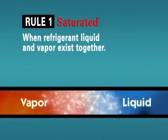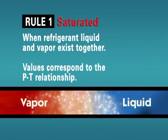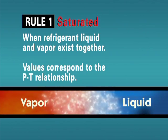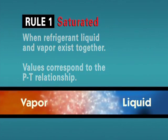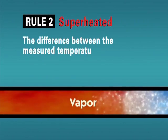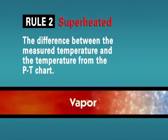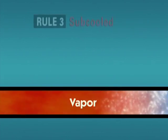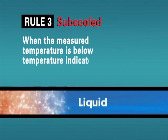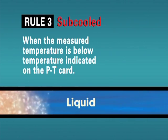Let's recap. There are three basic rules for determining the refrigerant condition in an operating system. Rule 1: When we have refrigerant liquid and vapor existing together, we have saturated refrigerant, and the pressure and temperature will correspond to our PT card. Rule 2: If our measured temperature is above the saturated temperature indicated on our PT card, we must have superheated vapor. The amount of superheat is the difference between our measured temperature and the saturated temperature. Rule 3: If our measured temperature is below the saturated temperature indicated on our PT card, we must have subcooled liquid. The amount of subcooling is the difference between our measured temperature and the saturated temperature. Understanding these rules and knowing where these three conditions can occur will enable you to use the PT card or the ChillMaster app as a vital tool in diagnosing system problems.